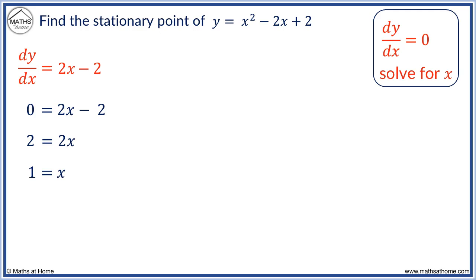We have found the x coordinate of the stationary point. To find the y coordinate, we substitute x equals 1 into the original function. We now evaluate this to get y equals 1 minus 2 plus 2, which equals 1. The stationary point has an x coordinate of 1 and a y coordinate of 1.